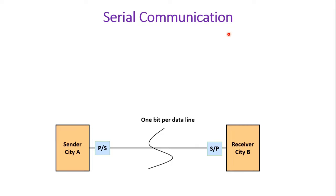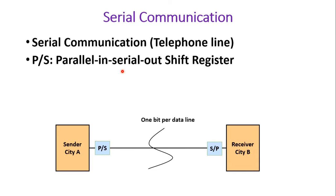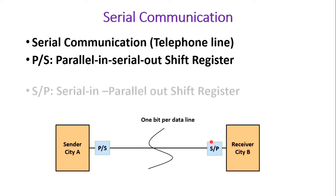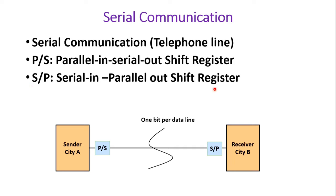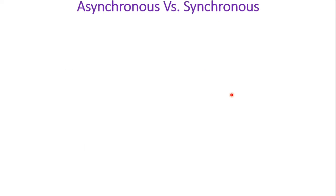In serial communication, the sender in city A has parallel data which cannot be transmitted over a single line. So we need to insert a parallel-in serial-out shift register to convert parallel data into serial data, which can then be transmitted one bit at a time. On the receiver side, a serial-in parallel-out shift register gathers the data back in parallel form. This is the general arrangement of serial communication.